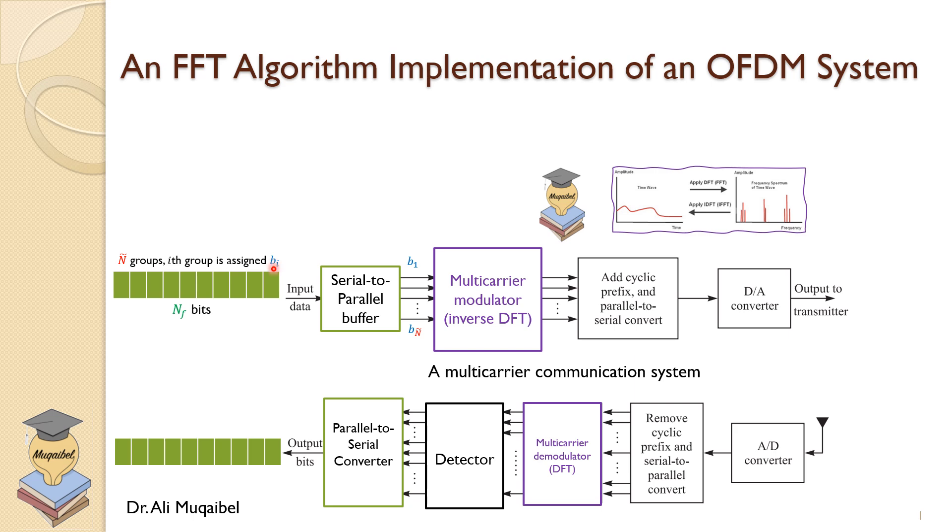The first stage is that this sequence will be converted using a serial-to-parallel buffer. So we have bits in parallel. These are the bits that are to be sent to the multicarrier.